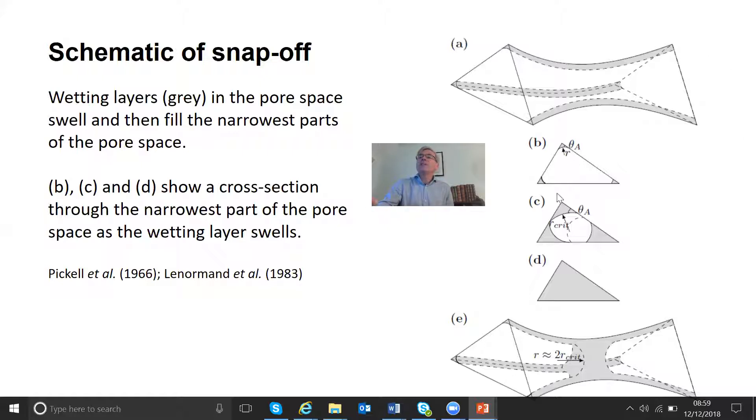So what happens is we get more and more water. But there comes a point, a critical point, at which the water has essentially more or less filled the corner. And if we were to put more water in, it's no longer retained in the corner, it's no longer stable. In fact, what would happen is the radius of curvature would decrease,